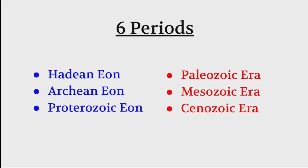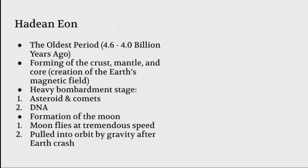Today I want to talk about six periods: the Hadean eon, the Archaean eon, the Proterozoic eon, the Paleozoic era, the Mesozoic era, and the Cenozoic era. The Hadean eon is the beginning of life, the oldest period from 4.6 to 4 billion years ago. During this period was the forming of the crust, mantle, and core, and the creation of Earth's magnetic field.